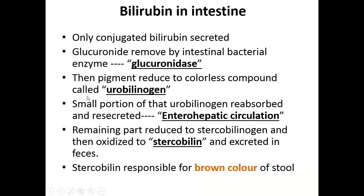An important point to remember: urobilinogen is formed only when bilirubin enters the intestine after conjugation. Only in that condition is it formed; otherwise it cannot be formed. In the case of obstructive jaundice, the obstruction lies in the bile duct. So after conjugation in the hepatocyte, it cannot reach the intestine. Ultimately, urobilinogen does not enter the intestine so it cannot be reabsorbed and enter the urine. Therefore, urobilinogen is absent in obstructive jaundice.